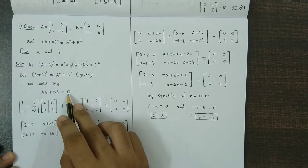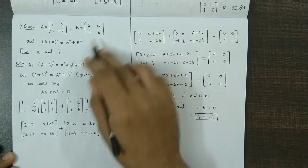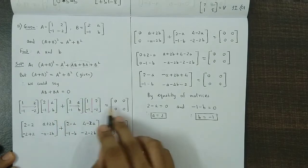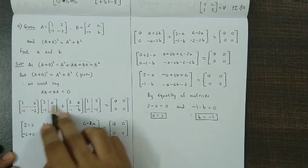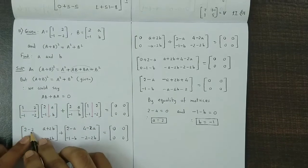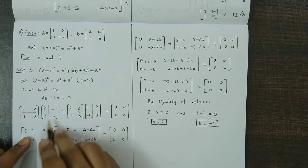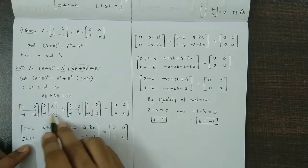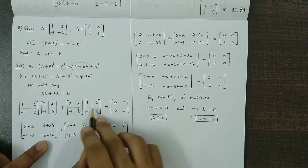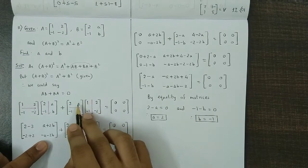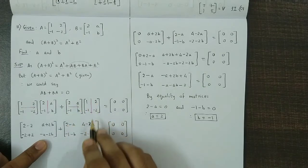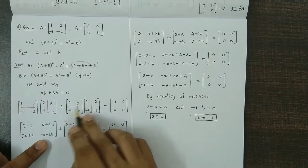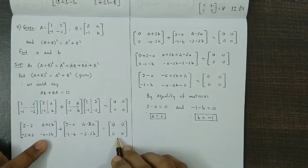We use this equation to find the missing values. We multiply matrices A and B, then add the product B into A, equaling the zero matrix of second order. Performing the multiplication: the first matrix gives 2 minus 2, a plus 2b, minus 2 plus 2, minus a minus 2b; the second gives 2 minus a, 4 minus 2a, minus 1 minus b, and minus 2 minus 2b.